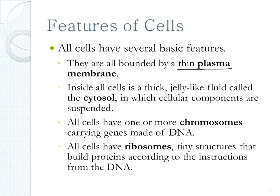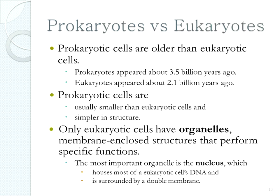All cells have some very common features. They all have a plasma membrane, a cytoplasm or cytosol inside, DNA organized into one or more chromosomes, and ribosomes that help make proteins. All cells have these four features whether they're prokaryotic or eukaryotic, whether they're animals, plants, fungi — whatever type of cell it is.